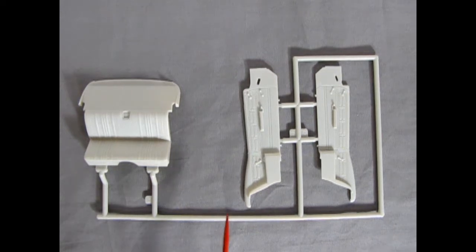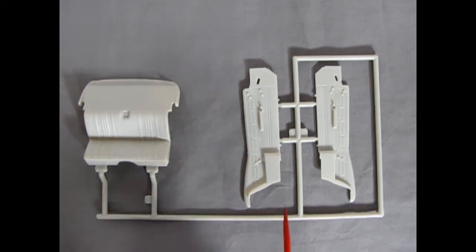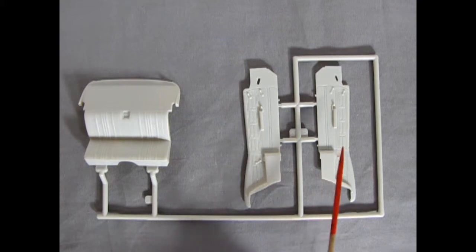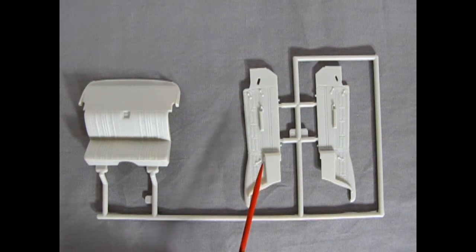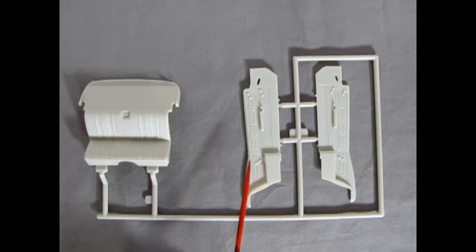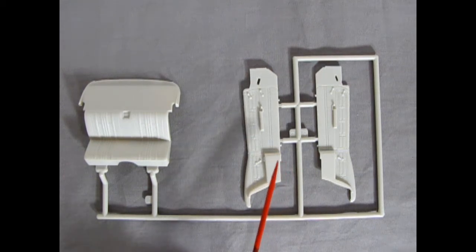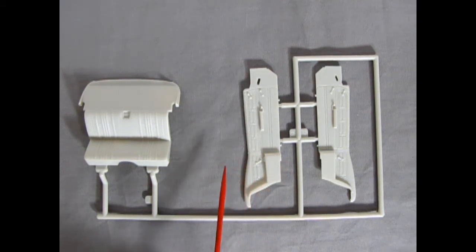Here on this parts tree, we have the interior panels and AMT of this era was generous enough to mold these flat and not like a tub, like some of the other kits that are older than this. Of course, this kit came out in 1997 when AMT was competing with Revell and Tamiya of Japan for best model awards.